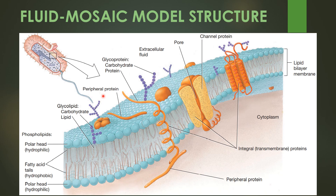Apart from the membrane proteins like integral protein and peripheral protein, the plasma membrane also contains glycolipids, that is the carbohydrate lipids, and glycoproteins, that is the carbohydrate proteins. This is the overall structure of the fluid mosaic model of the plasma membrane, and this part is the cytoplasm.